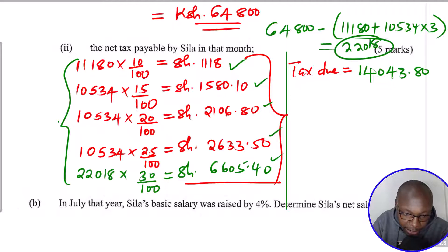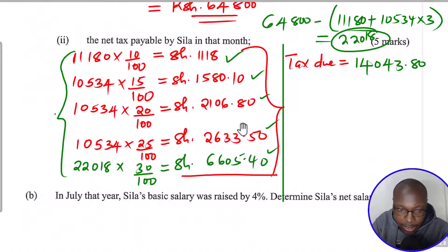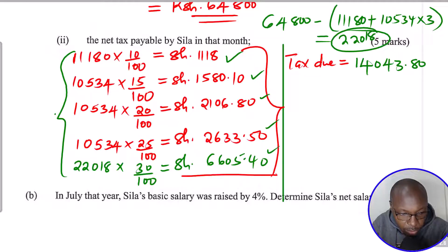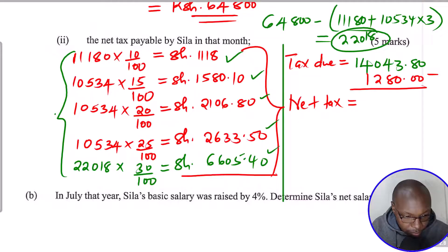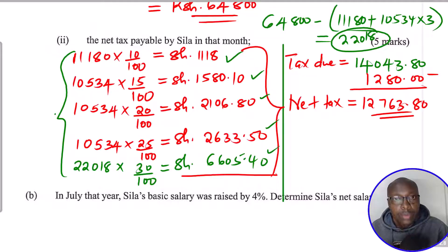To get the net tax, we subtract the personal tax relief. The relief is 1,280. So net tax equals 14,043.80 minus 1,280, which gives a net tax of 12,763.80. That completes Part 2.